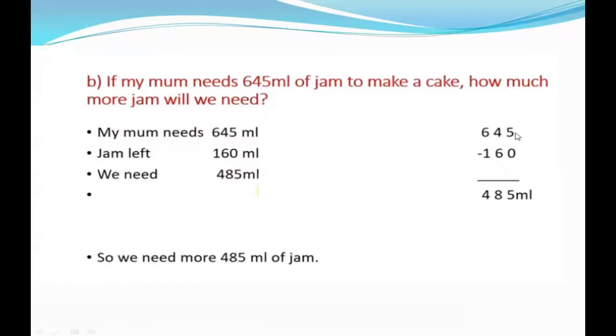5 minus 0 is 5. We cannot do 4 minus 6, so I borrow from here. This is 14 and this will be 5. So 14 minus 6 will be 8, and 5 minus 1 is 4. So 485 milliliters of jam we need more. So if you want to check your answer, you add this: 160 plus 485, you get 645. That much more you need.